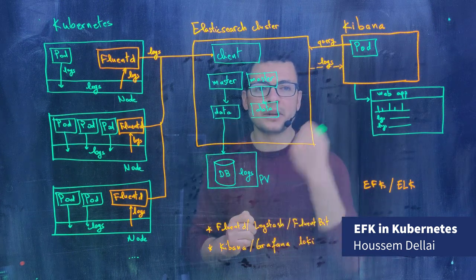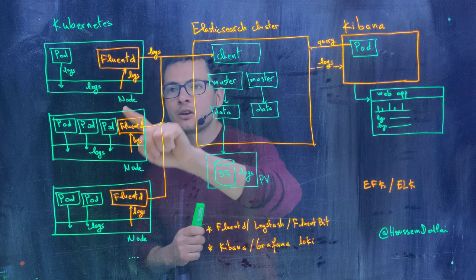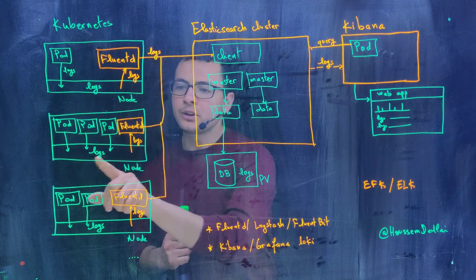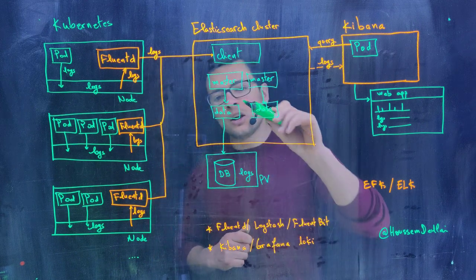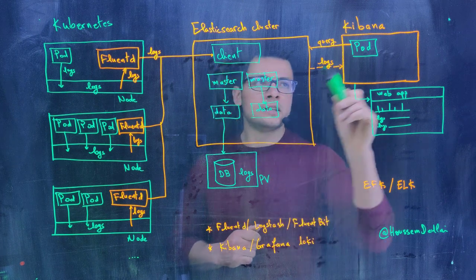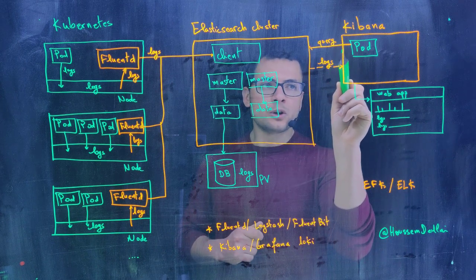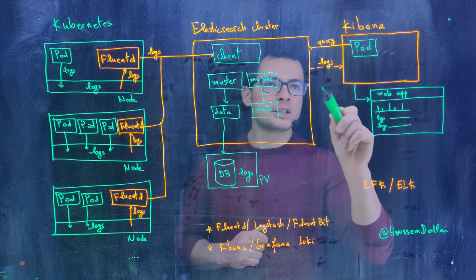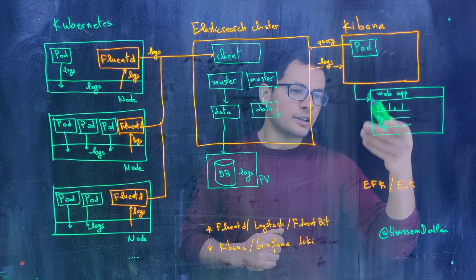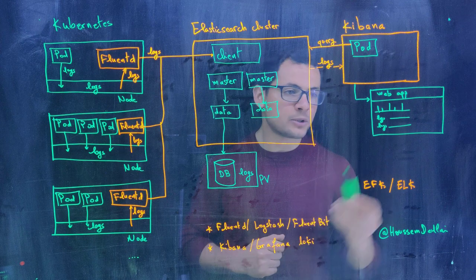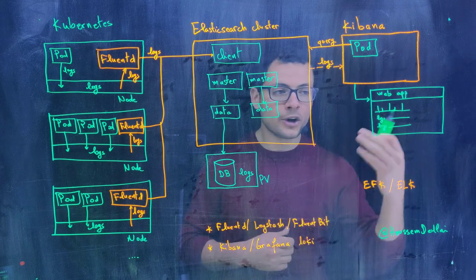Fluentd will be installed in each of our nodes to collect the logs created by the different pods. Fluentd will then send those logs into the Elasticsearch cluster, where they will be saved inside a database. Kibana will then query Elasticsearch to get the different logs and produce a nice dashboard with a nice user interface and graphics for developers to read those logs and understand how the application behaves.